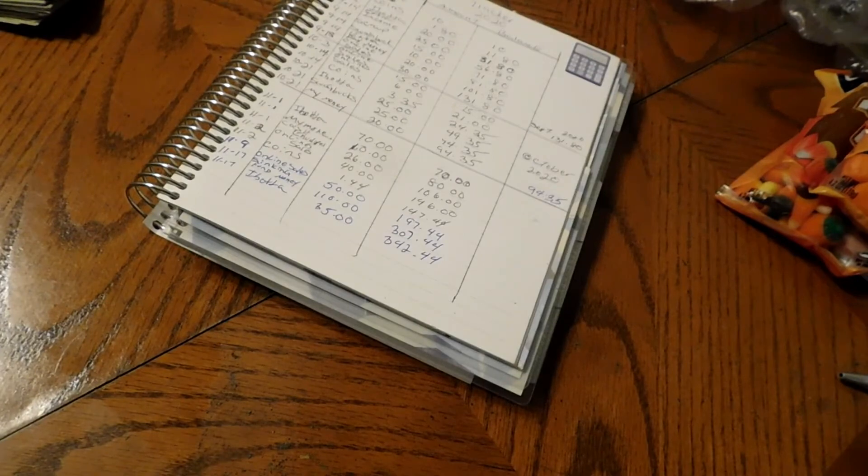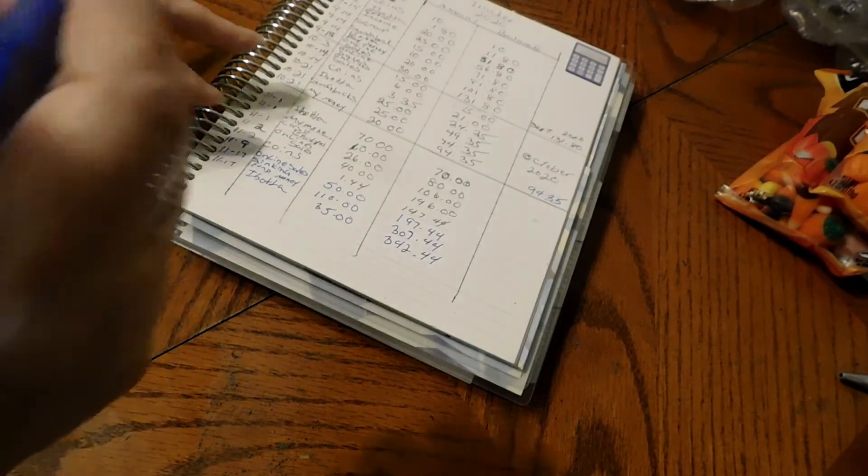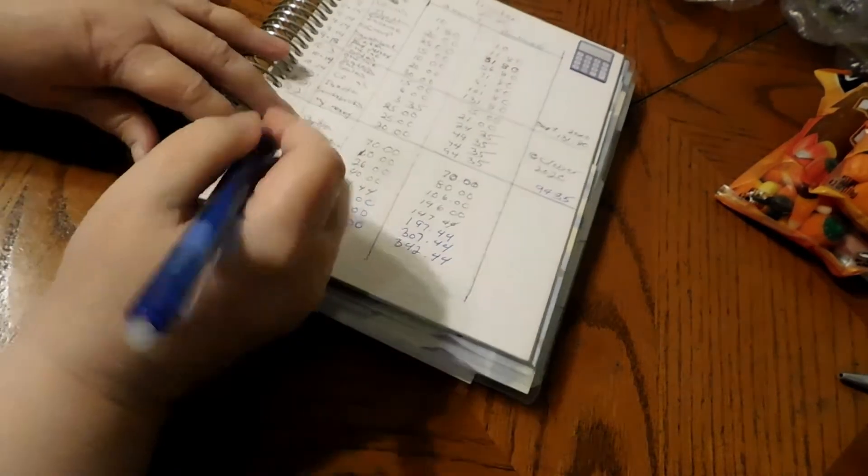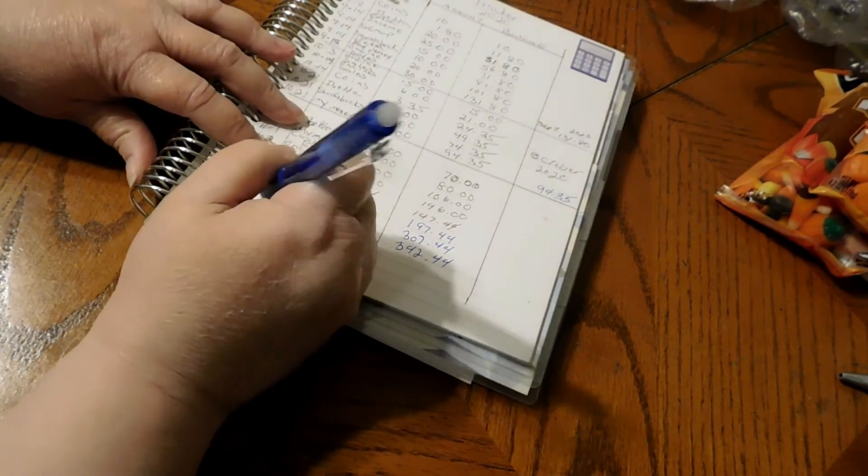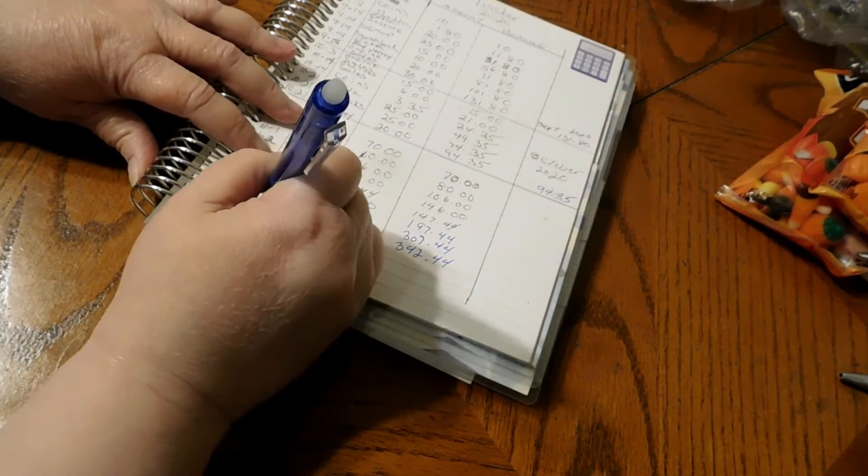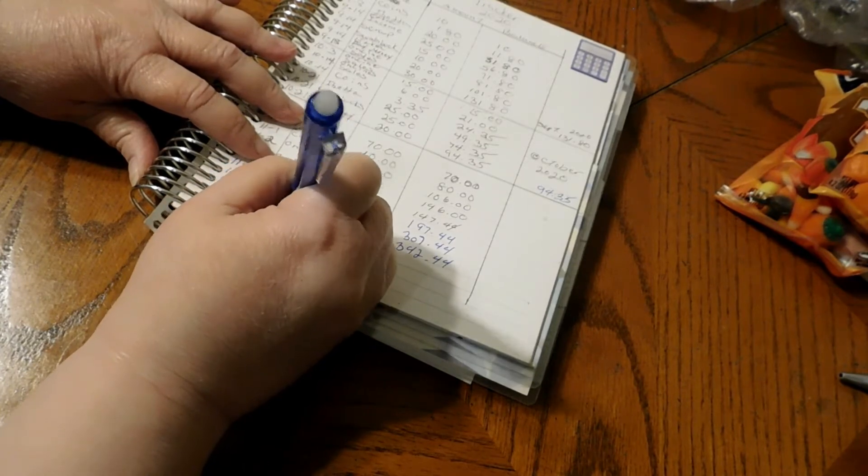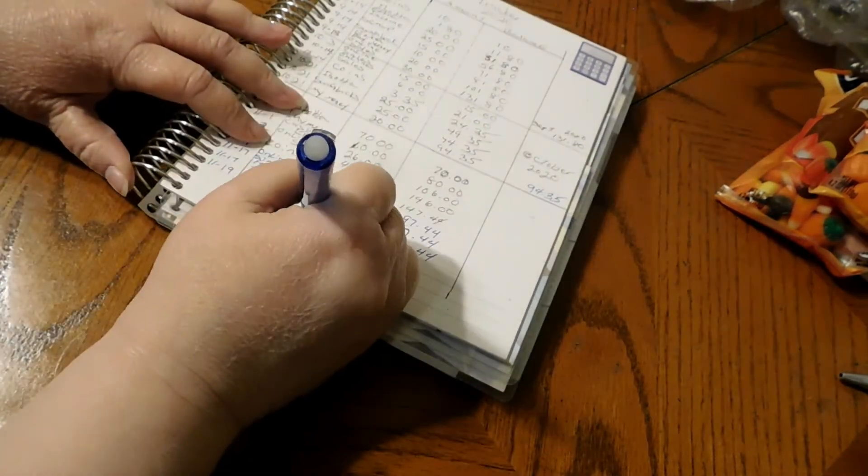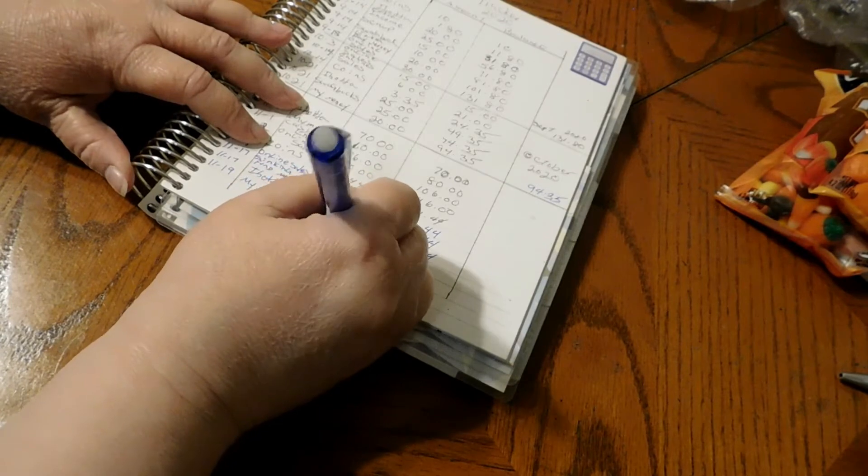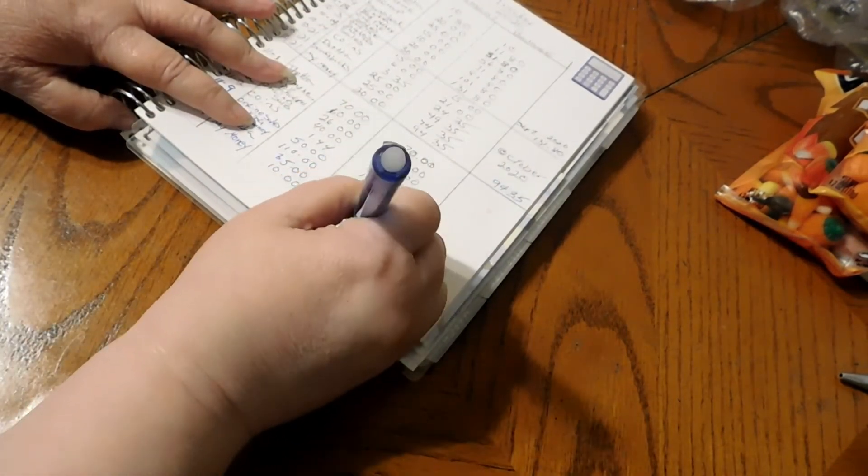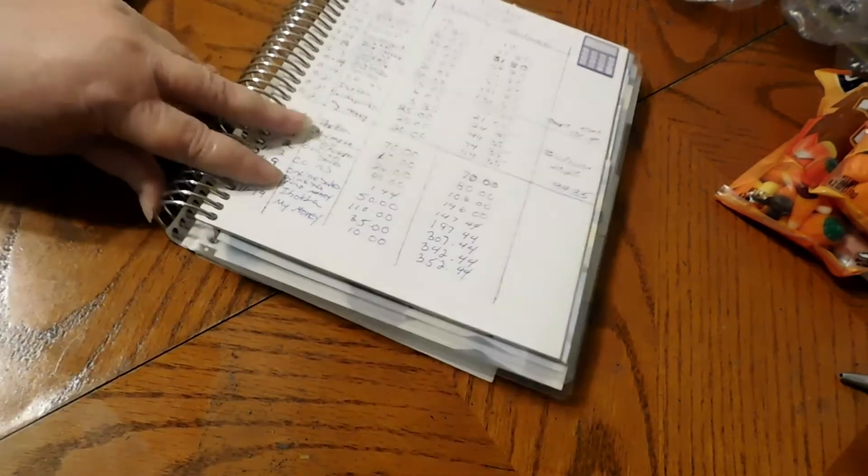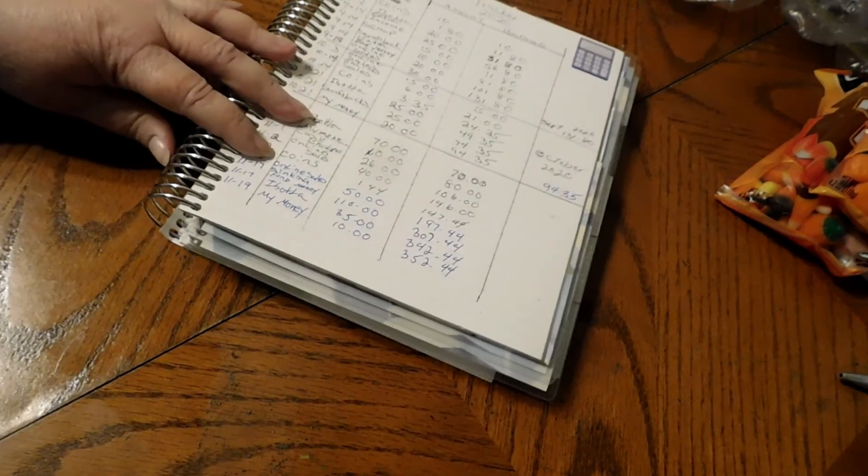Then I took $10 from my money when I did the cash stuffing envelopes, and I kept $10 out. So I'm adding $10 of my money to it. I'm just going to put 'my money,' and that was $10, and that brings it to $352.44.